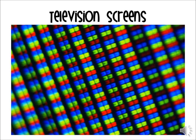A good example of how those primary colors of light work together would be television screens and computer screens. You can definitely see this on older screens, and as our technology gets better, it's harder and harder to see it with your eye. If you can get close enough to an older television screen, you will see that the individual tiny squares or pixels on the screen are actually made up of bands of color — there's blue, there's green, and there's red. If the television screen needs to be white, all three lights will come on at the same time. If the screen needs to just be blue, only the blue lights will come on.